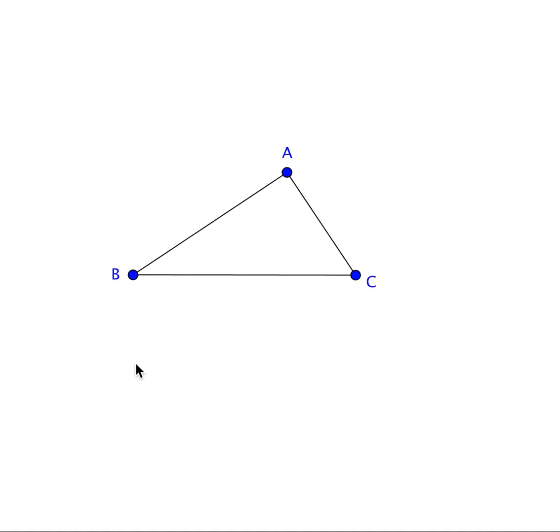On each of the sides BC, AB, and CA, squares are drawn.